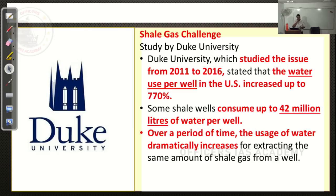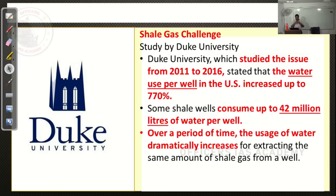Cabinet gave approval for shale gas exploration. Previously, under the NELP regime, you got permission for extracting one specific kind of hydrocarbon. Under HELP, it is uniform licensing — get one license and you can extract any kind of hydrocarbon. People fear this because they may be told you are extracting natural gas at 500 meters, but the license allows much more.